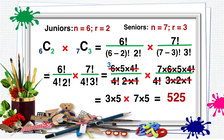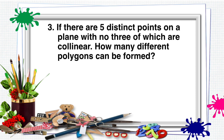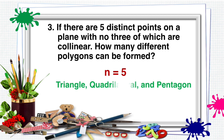How about question number 3. If there are 5 distinct points on a plane with no 3 of which are collinear, how many different polygons can be formed? We have N equal to 5 distinct points. We need to form polygons from those points — these polygons are triangle, quadrilateral, and pentagon. For triangle, R is equal to 3 sides. For quadrilateral, R is equal to 4 sides. And for pentagon, R is equal to 5 sides.